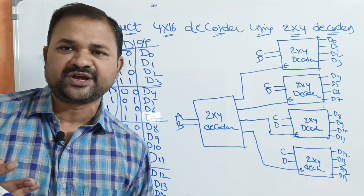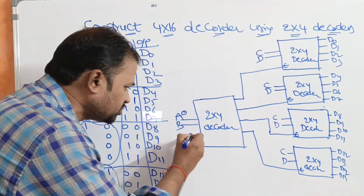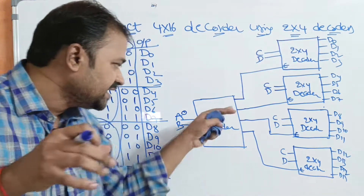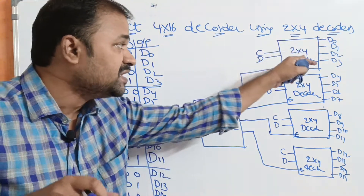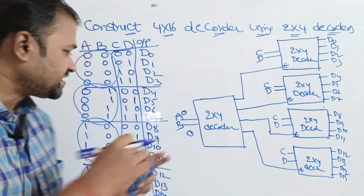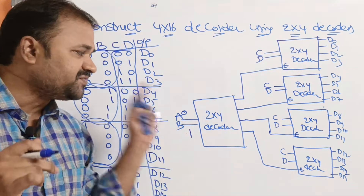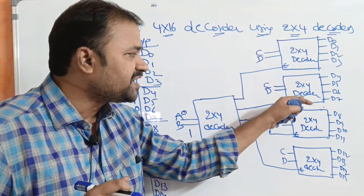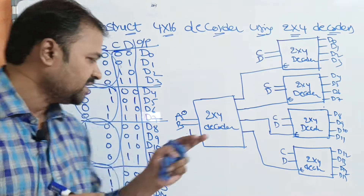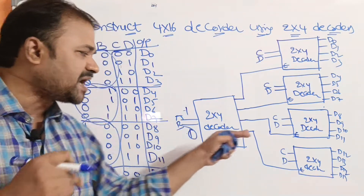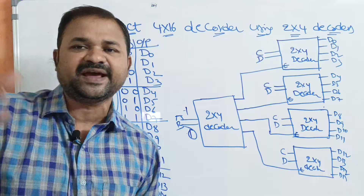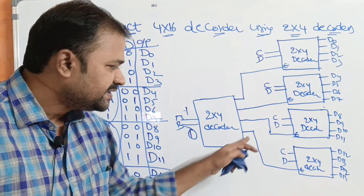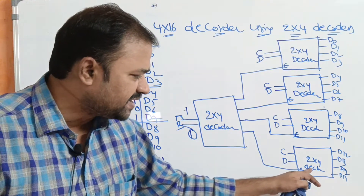When inputs A and B are 0, 0, the 2 by 4 decoder produces the first output, which is used to enable the first 2 by 4 decoder. If the inputs are 0, 1, then the second output line will be activated, which is used to enable the second 2 by 4 decoder. If the inputs are 1, 0, it produces the third output — D2 — to enable the third decoder. If the inputs are 1, 1, then the last output line is used for enabling the last 2 by 4 decoder.